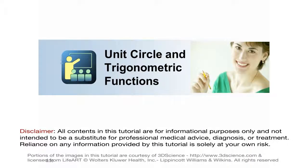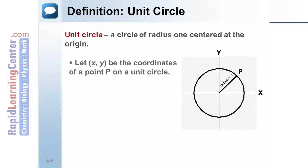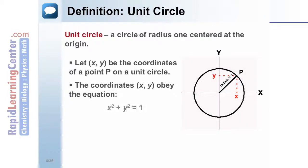This section will introduce the unit circle and relate it to the trigonometric functions. A unit circle is a circle of radius 1 centered at the origin. Let x, y be the coordinates of a point on a unit circle. The coordinates x, y obey the equation x squared plus y squared equals 1.